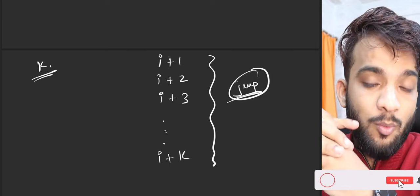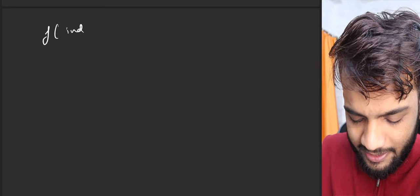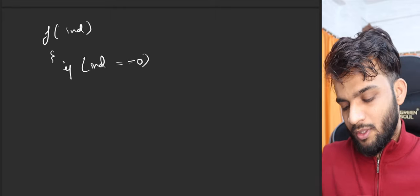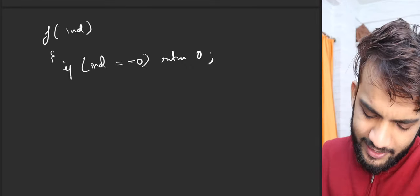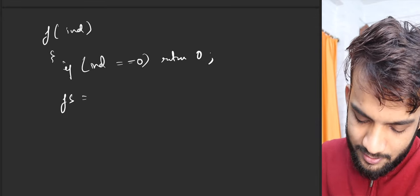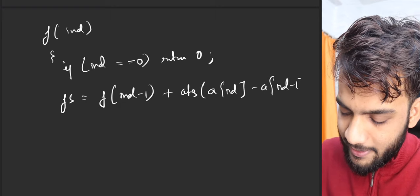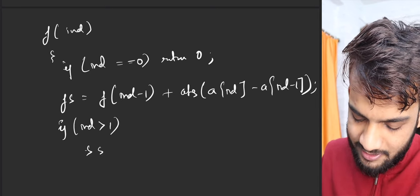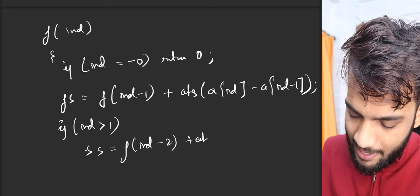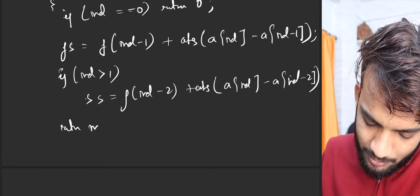What is going to be the minimum energy required? Most of you remember the recurrence, so make sure you've watched Lecture 3. If you remember, the recurrence was something like f(index): if index == 0 return 0. Every problem has to be expressed in terms of indexes. If taking the first jump, you reach index-1 and the energy is |a[index] - a[index-1]|. If taking the second jump (only if index > 1), it's f(index-2) + |a[index] - a[index-2]|.